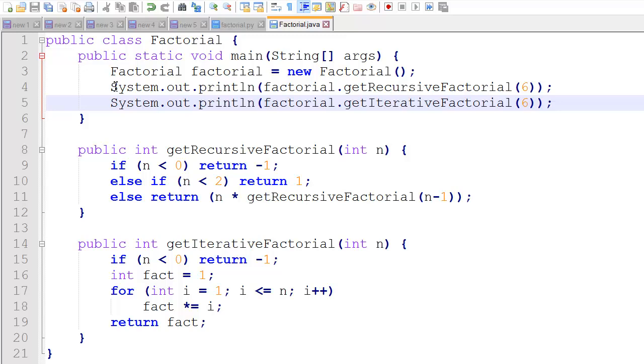Our next statements are print factorial dot get recursive factorial for 6, and print factorial dot get iterative factorial, or using the looping method for 6. So in both of them we pass in a 6, we should get 720 back.